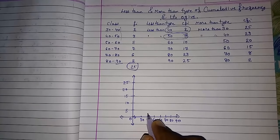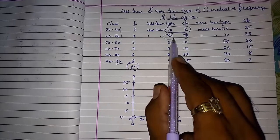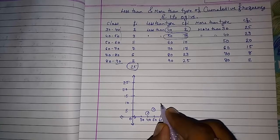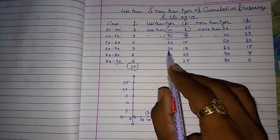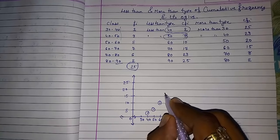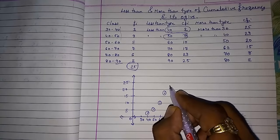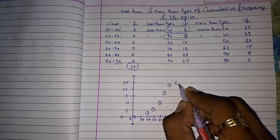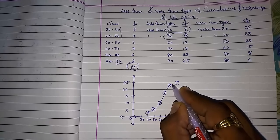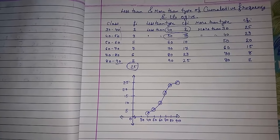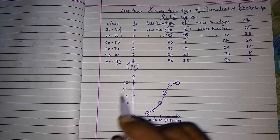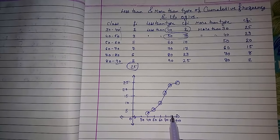Now I will represent the less than type ogive. The coordinates are: (40, 2), (50, 5), (60, 10), (70, 17), (80, 23), and (90, 25). Plotting these and drawing the curve, I get the less than ogive. In the less than type, you can see it is starting from the base and going upward.